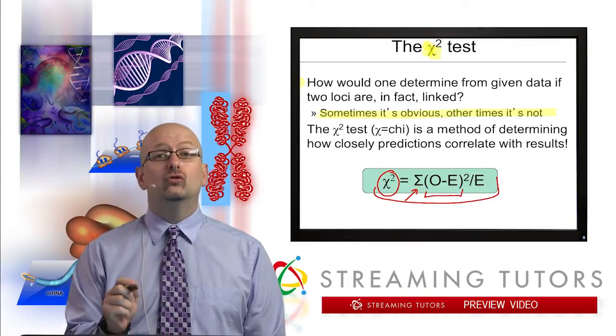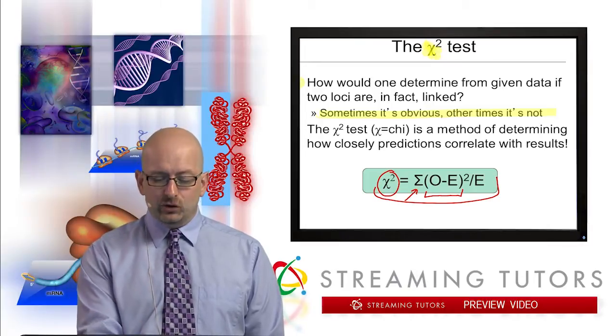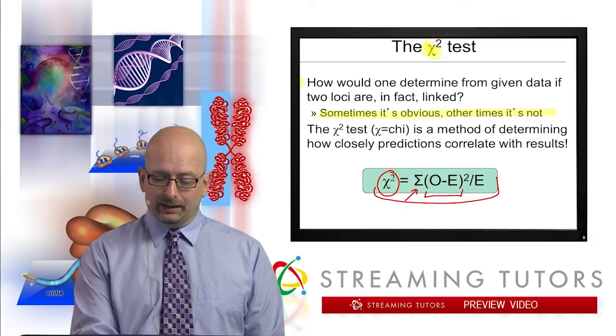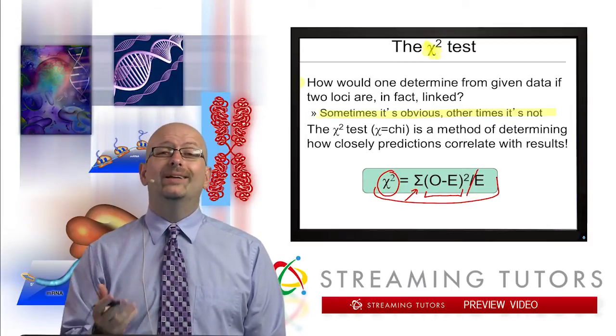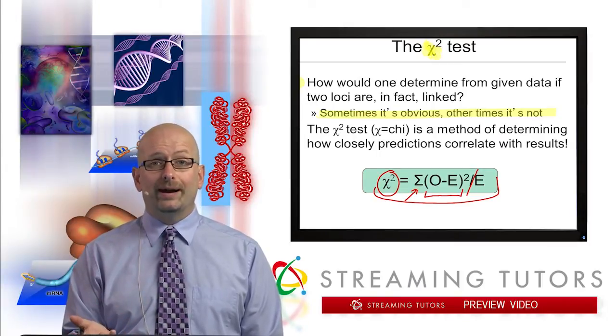So it's the sum of the observed minus the expected, that number, because it's in parentheses, squared, that's where the squared in chi-square comes from. And then you're going to add up all those, depending how many classes there are, and divide it by the expected.